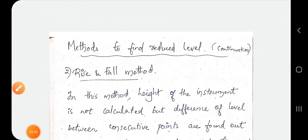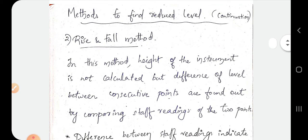The rise and fall method is to find the reduced level of points. Now we will check the height of the instrument. We will check the direct height of staff readings, the rise and fall, and the reduced levels of points.